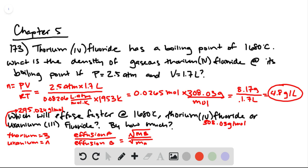To determine by how much, we need to do the math. The thorium compound is B, so I'll plug in 308.03 grams per mole on the top. The uranium compound is on the bottom, 295.024 grams per mole.